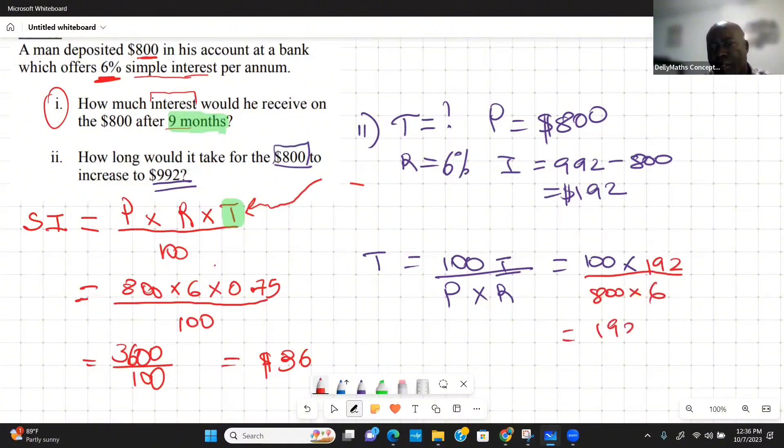So this is going to give me 19,200 over 4,800. Let's see what we get from that. 19,200 divided by 4,800, and this will be about four years. So the time it will take would have been four years.